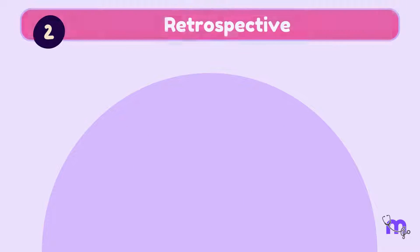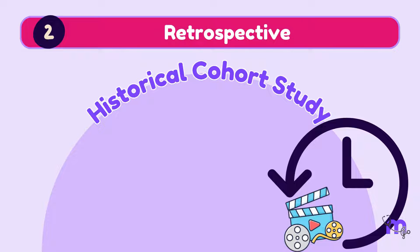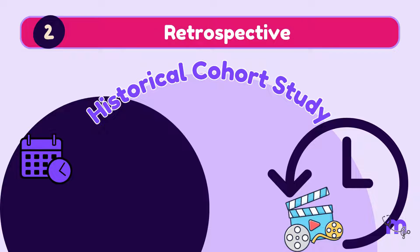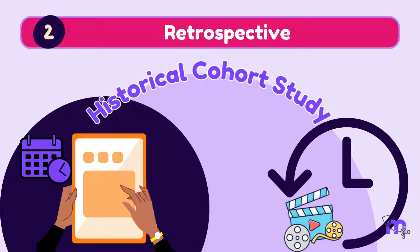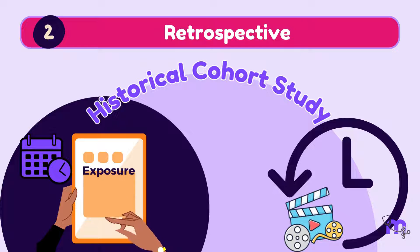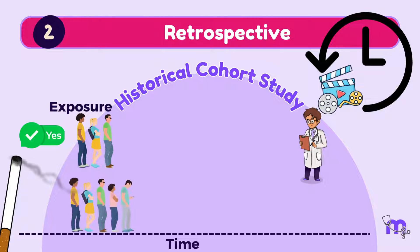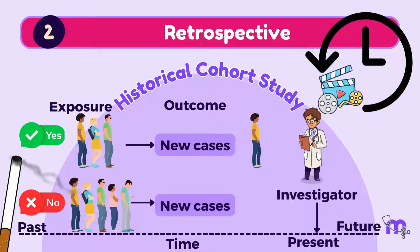The word retrospective means to look back at past events. Therefore, this type of study is also called a historical cohort study. I look back in time and use pre-existing data from old medical records to examine the relationship between exposure and outcome. For example, I identify a group of people who smoked and a group who never smoked, and then look back at medical records to see how the rate of lung cancer differs between the two groups.